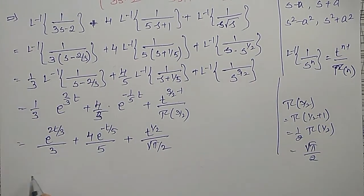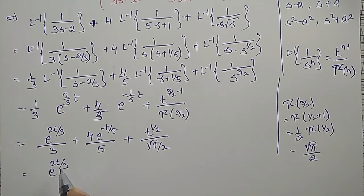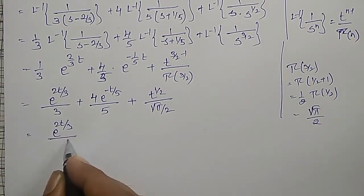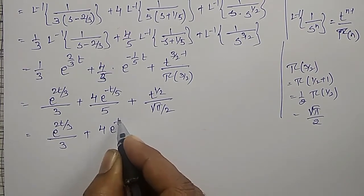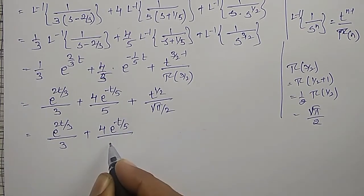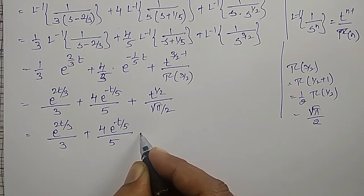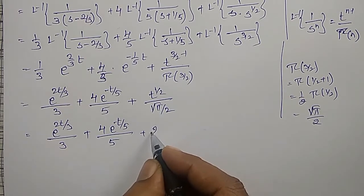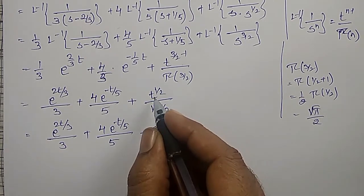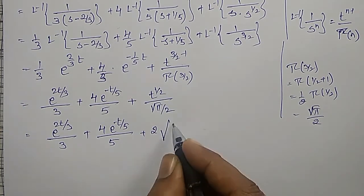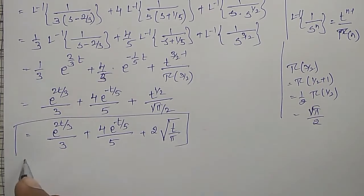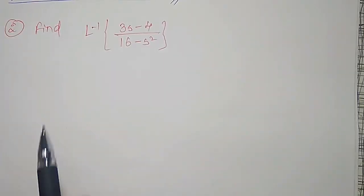Simplifying the full expression: e^(2t/3)/3 + 4e^(-t/5)/5 + t^(1/2)/(√π/2). Reciprocating, t^(1/2) is √t, so the third term becomes 2√t/√π = √(t/π) · 2, which can be written as √t divided by √π... simplified as 2√t/√π. This is the required answer.